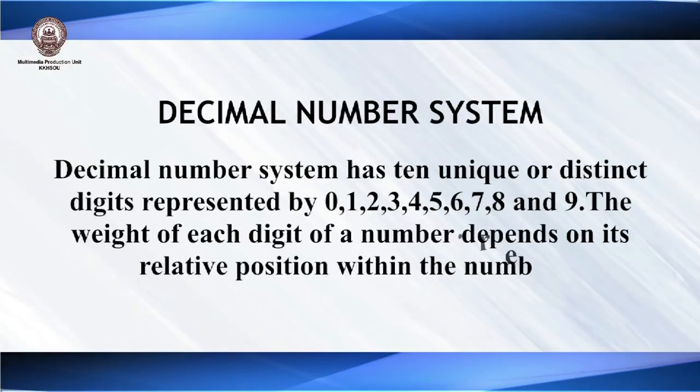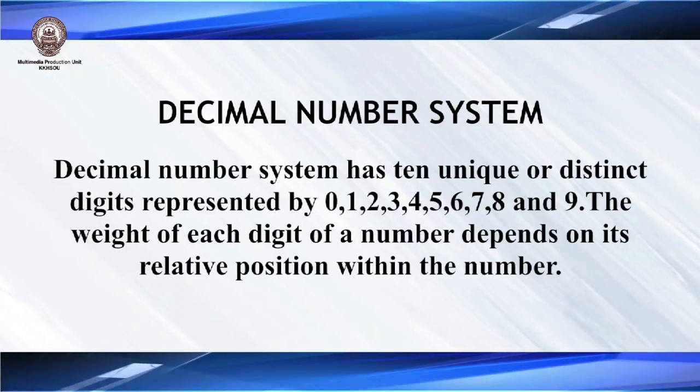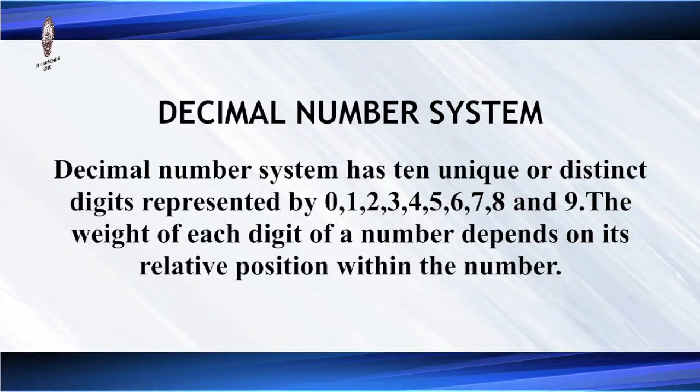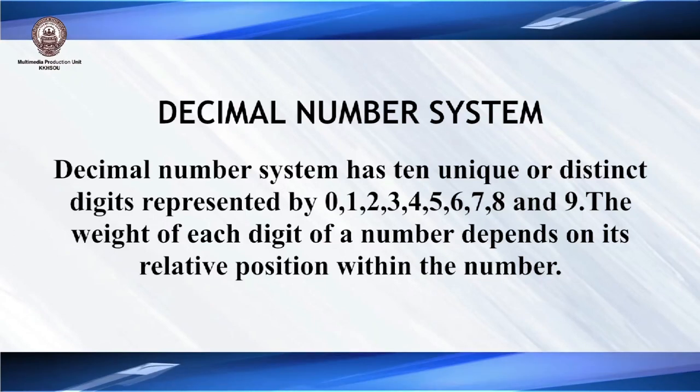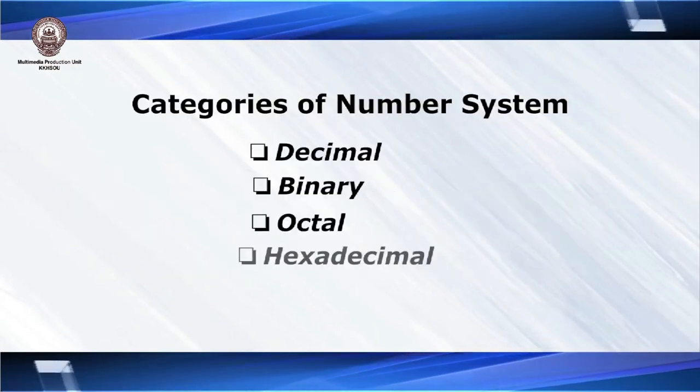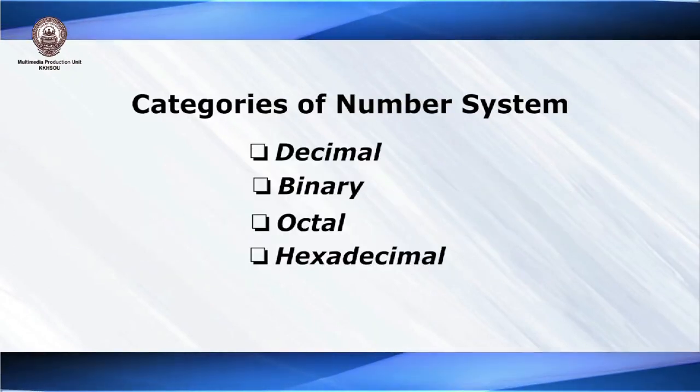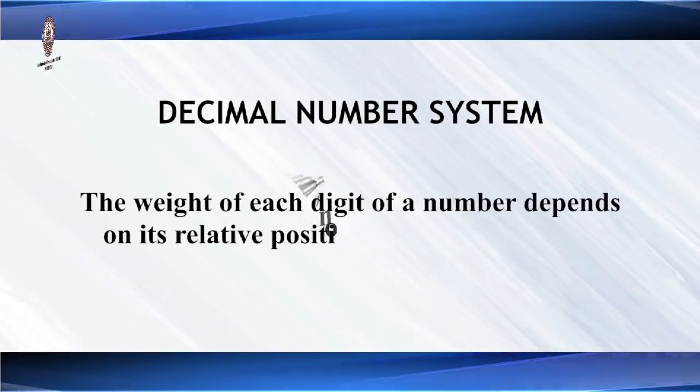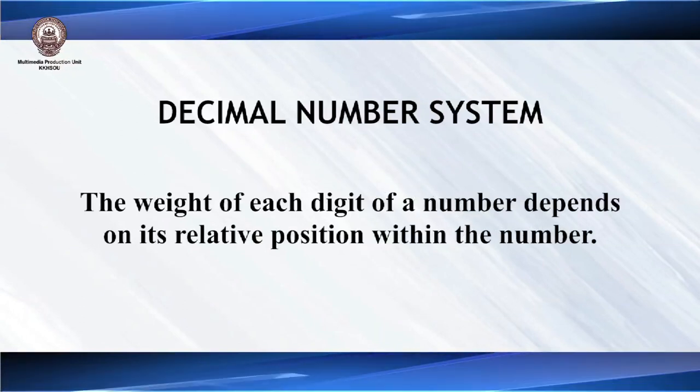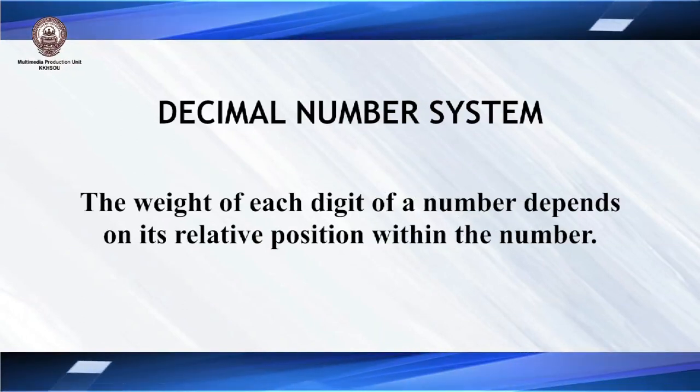The decimal number system, as we all know, is made up of 10 digits, that is from 0 to 9. Similarly, there are other number systems like binary, octal, and hexadecimal. Now, how do we calculate the weight of a particular digit in the decimal number system? The weight of each digit depends on its relative position within the number.